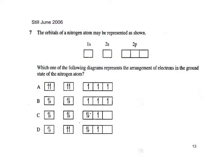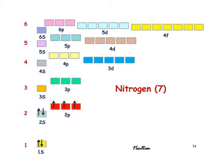Pause this slide and have a go please. The configuration is 1s², 2s², 2p³. Nitrogen has atomic number 7: 2 and 2 is 4, and 3 is 7. In a little bit more detail: 2 in the 1s level, 2 in the 2s level, and then in the 2p level we have 1 electron in each orbital.